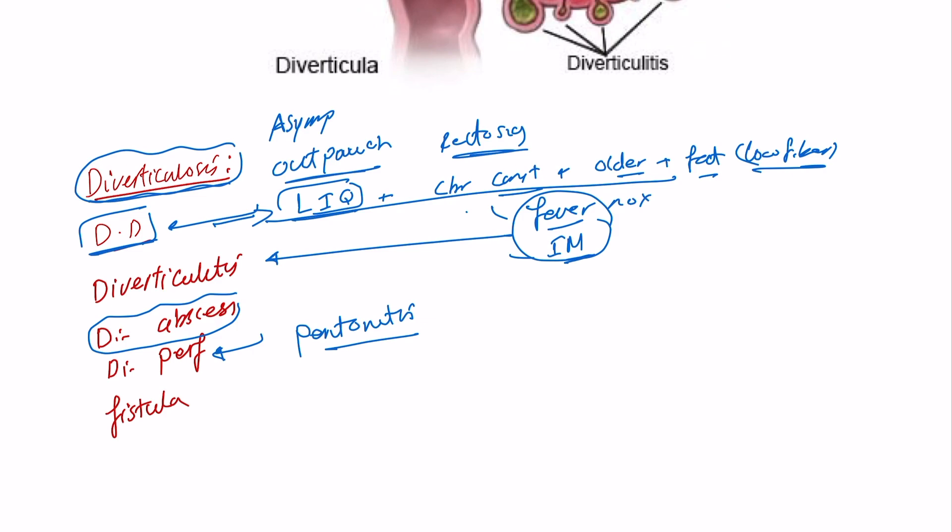Diverticular abscess might pass without any surgical intervention, but they will have fecal collection around the colon and lead to formation of an abscess. The inflammation might start to even erode the surrounding structure, and lead to a fistula.